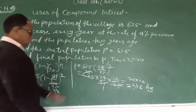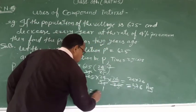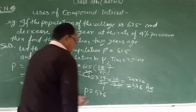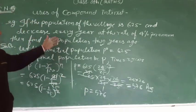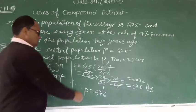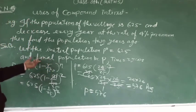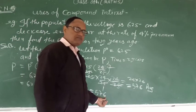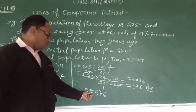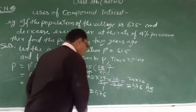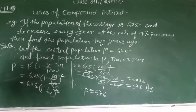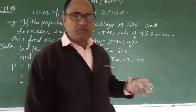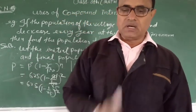These types of problems cover all these cases. The final population P is equal to 576. After this, the next problem I will teach you tomorrow. Thank you for your time.